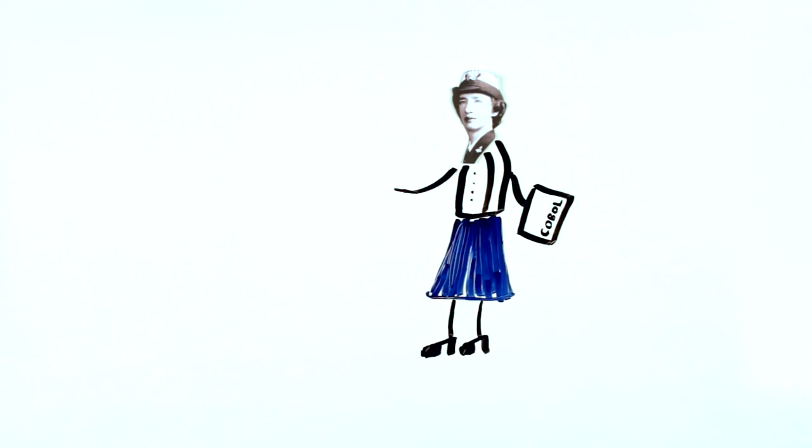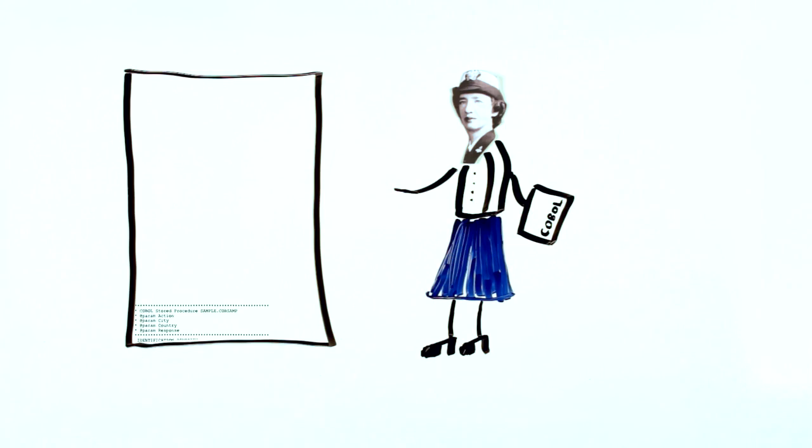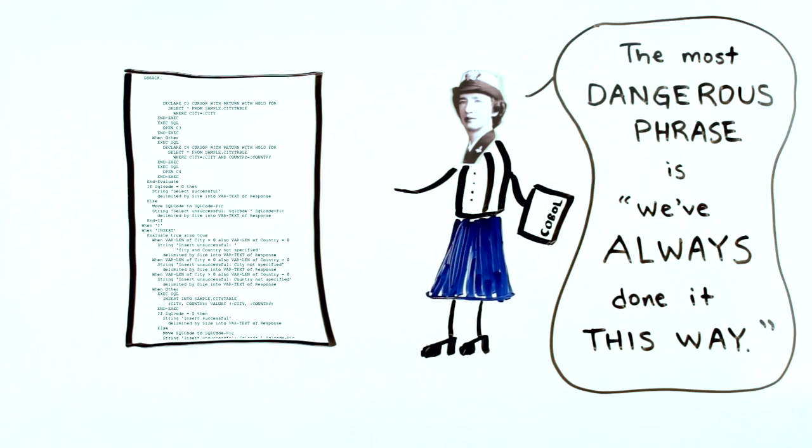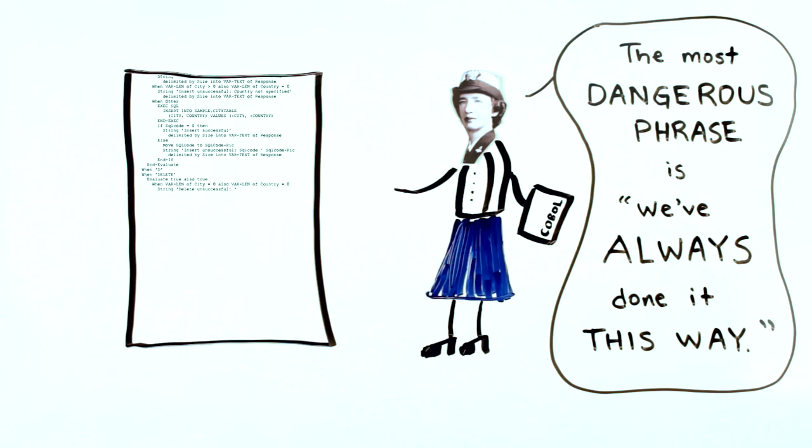In 1959, she worked on the committee that defined a new computer language, COBOL. Grace believed that programming languages should be close to English rather than machine code, which was the convention.